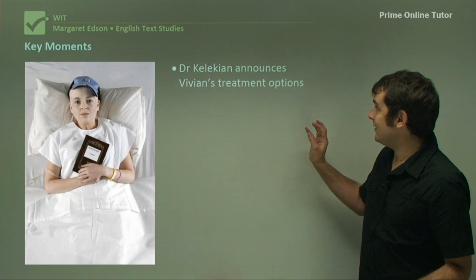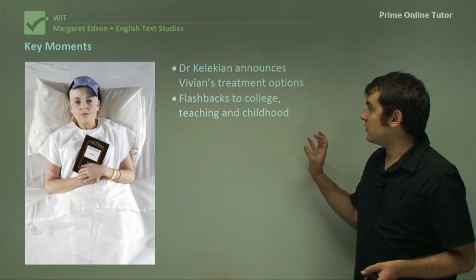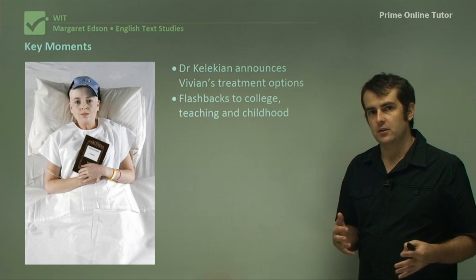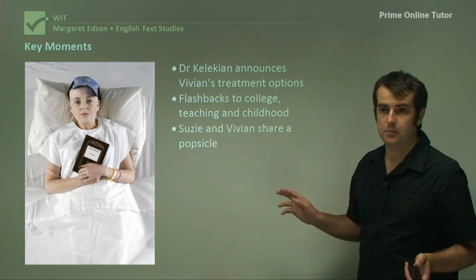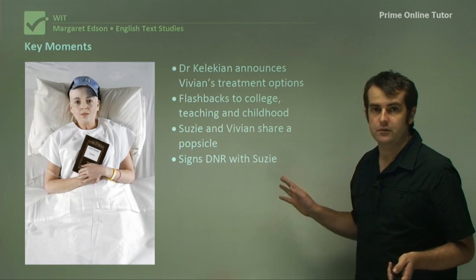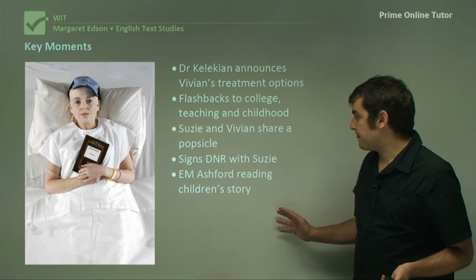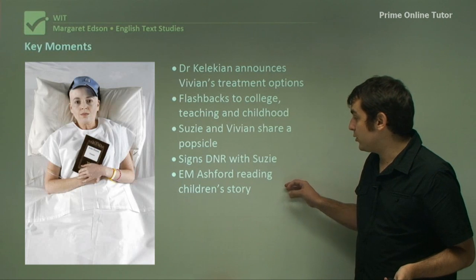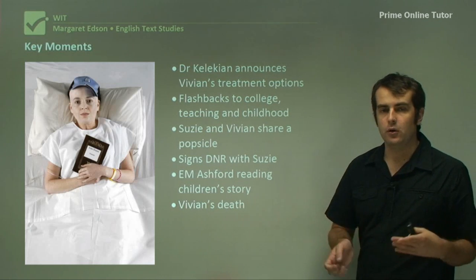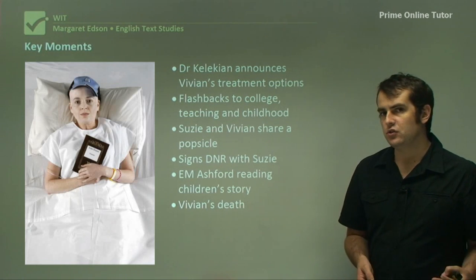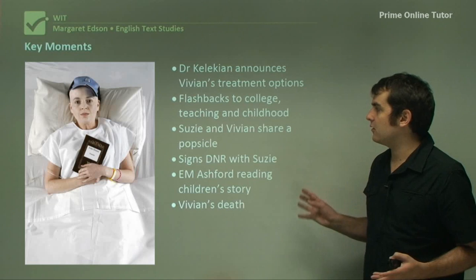Key moments include where Dr. Kolekian announces Vivian's treatment options. Flashbacks to college, teaching, and childhood — in fact, any of her flashbacks throughout the play are very good sources of ideas. Susie and Vivian sharing a popsicle together, the point where she signs the Do Not Resuscitate order, E.M. Ashford reading her a children's story, and finally her death as well. It's not about choosing all of these — it's about choosing which ones give you the most evidence to develop your response.